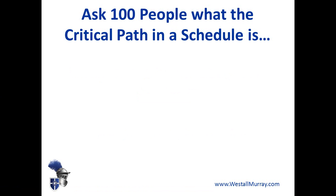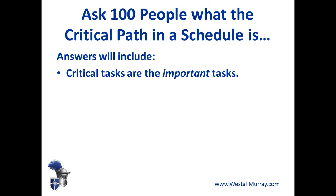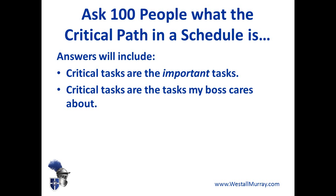In my personal experience, if you stop a hundred professional-looking people on a street and ask them what we mean by the critical path in a schedule, you'd get a variety of answers. Some people might simply say the critical tasks are the important tasks and leave it at that — those people are right, but not for the reasons they typically think. Another very common answer is that those are the important tasks in the sense that they're the ones your boss cares about, the ones you have to report on.